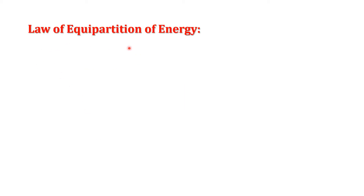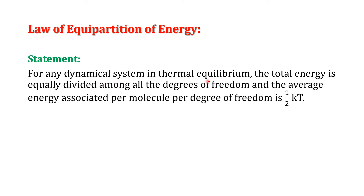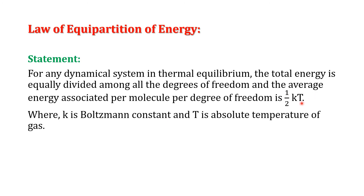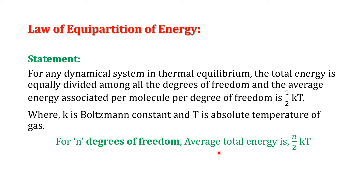The law of equipartition of energy was first given by Maxwell. It states that for any dynamical system in thermal equilibrium, the total energy is equally divided among all degrees of freedom, and the average energy associated per molecule per degree of freedom is half kT. If a system has n degrees of freedom, then its average total energy is n/2 kT.